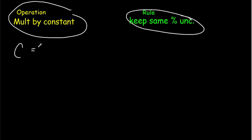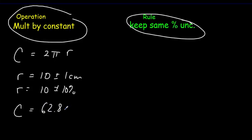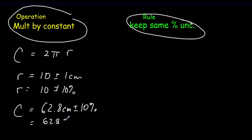So let's say we want to calculate a circumference. Circumference equals 2π, a constant, times r, our measured value. Let's say r equals 10 plus or minus 1 centimeter — that is, 10 plus or minus 10%. So there's a 10% uncertainty in r, which means we're also going to have a 10% uncertainty in the circumference. Our circumference would be 2π times 10, which is 62.8 centimeters, plus or minus 10%. And if we wanted to express that as an absolute uncertainty, we'd take 10% of 62.8, giving us 62.8 plus or minus about 6.3 centimeters.